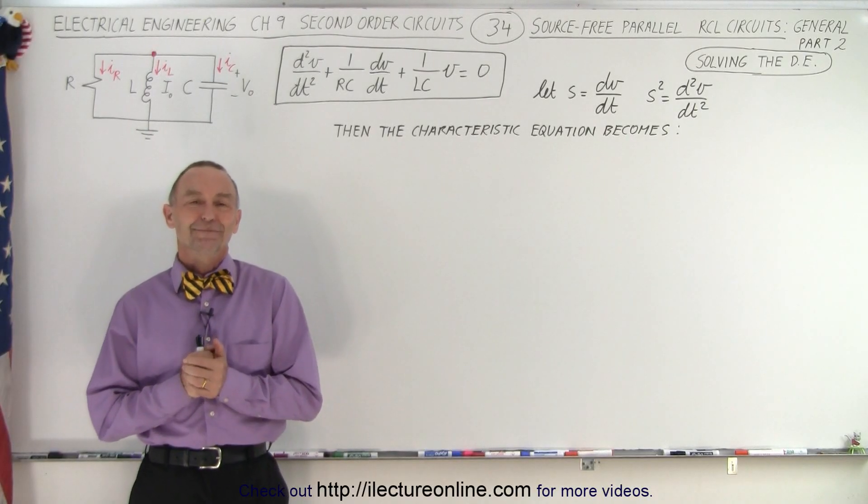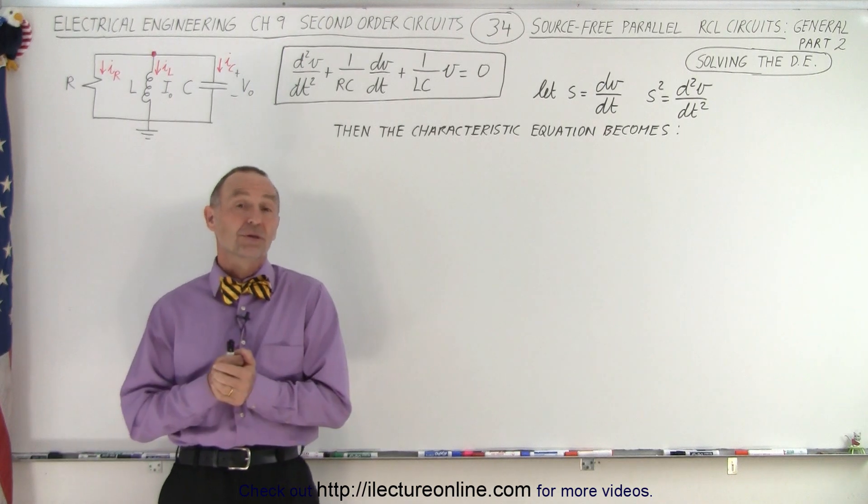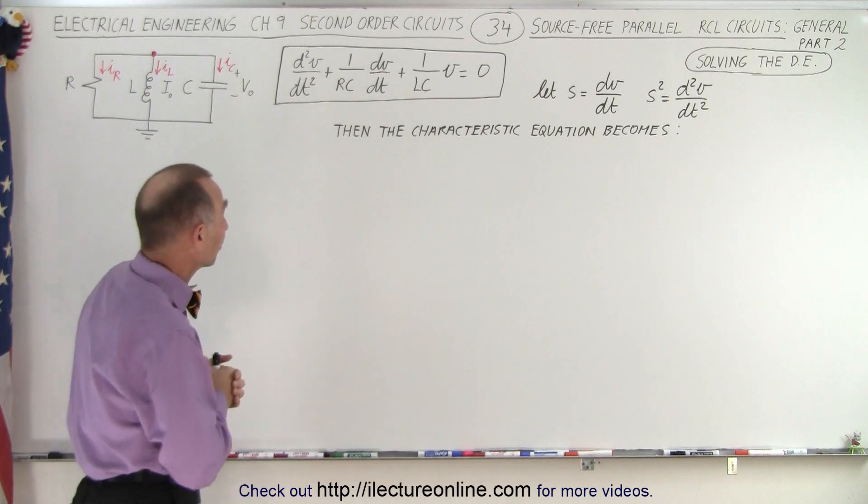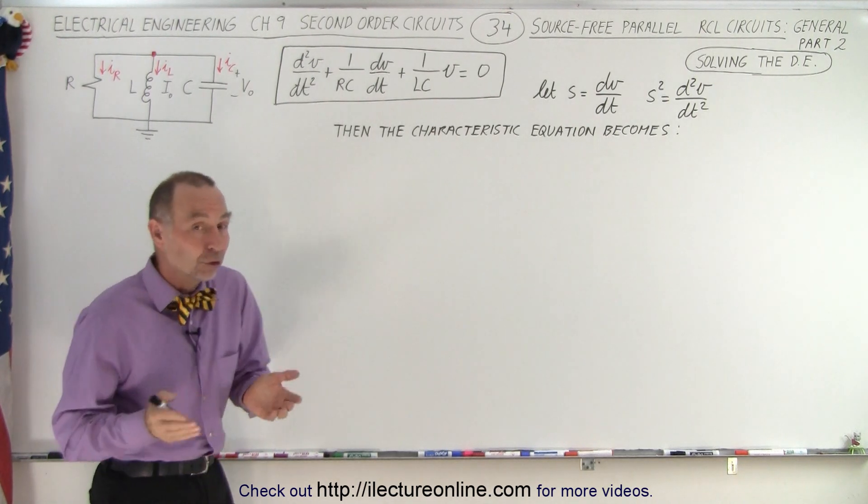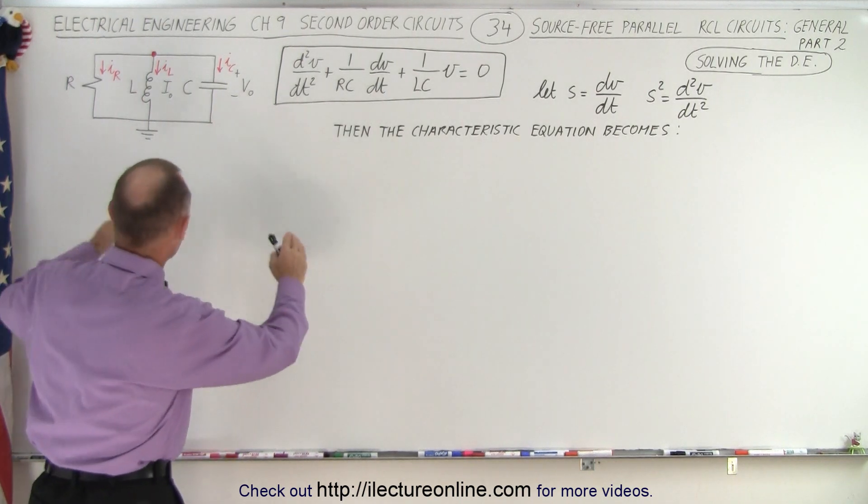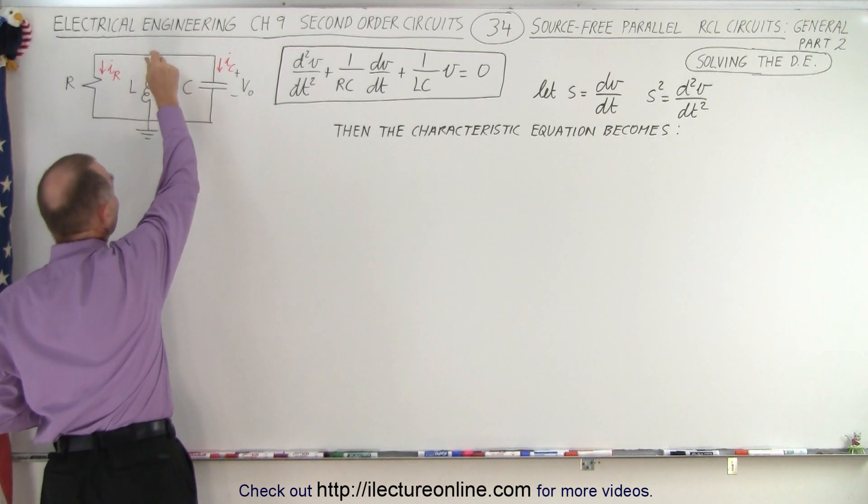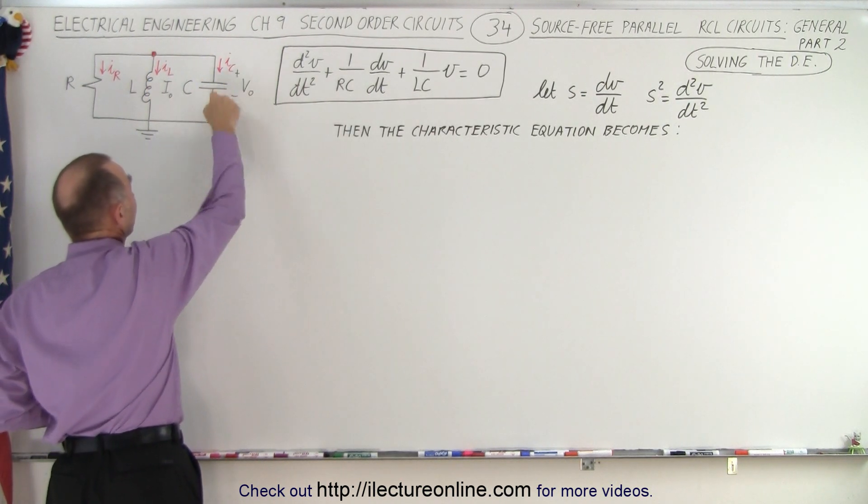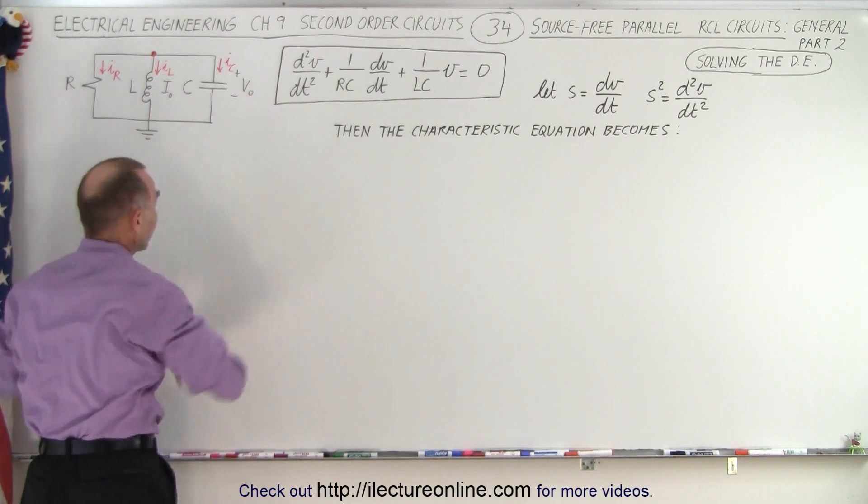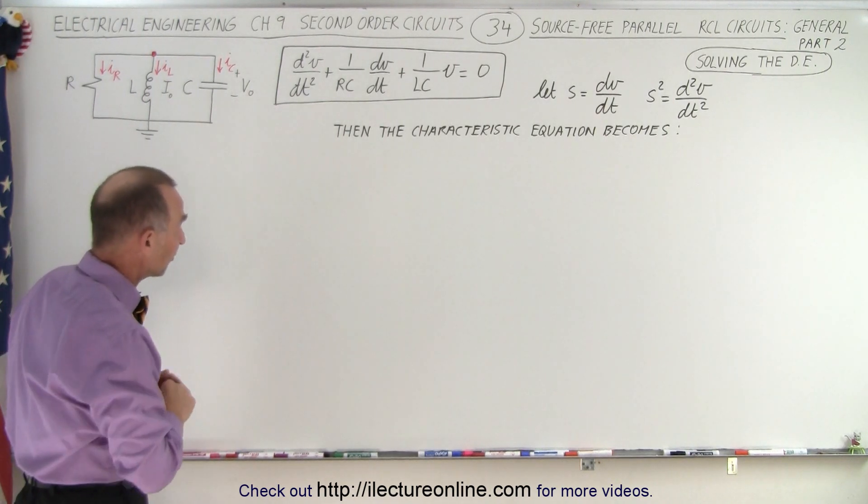Welcome to Electronline. In the previous video we developed a general differential equation for an RCL circuit, in particular a source-free parallel RCL circuit, and here it is. So now we're going to solve that differential equation. Remember that the equation was derived using a convention where we picked a point in the circuit on the positive side of the initial voltage across the capacitor, and we had all the currents emanating from that particular point. That's the convention we used, and then we end up with that differential equation.